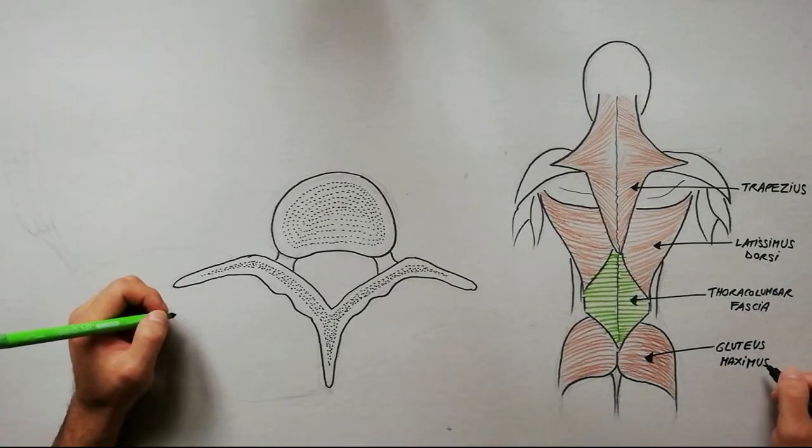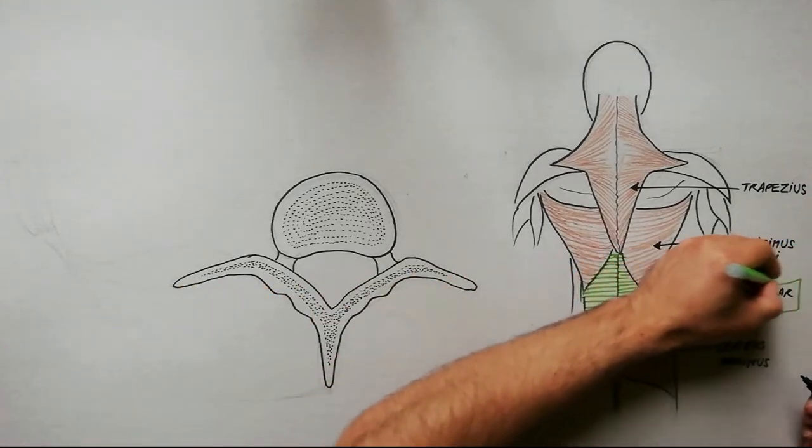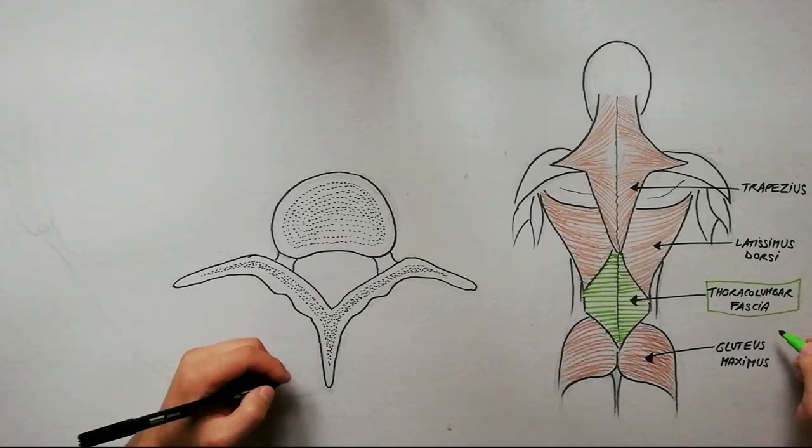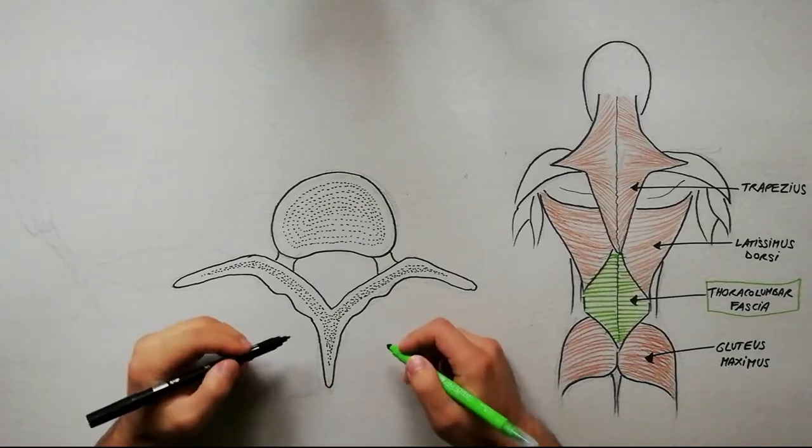For descriptive purposes we will describe the thoracolumbar fascia in the lumbar region as the lumbar part. The lumbar part of the thoracolumbar fascia is very strong and has three layers.